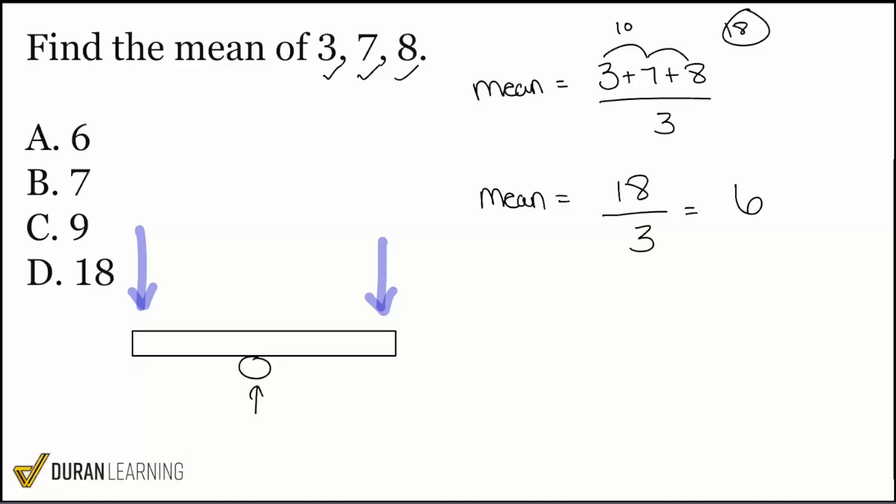Now let me show you this, everybody. What was the mean that we just calculated? There it is right here. It was six. I want you to think of the mean as that balance point, everybody, right here. Here's the balance point. There's the six.